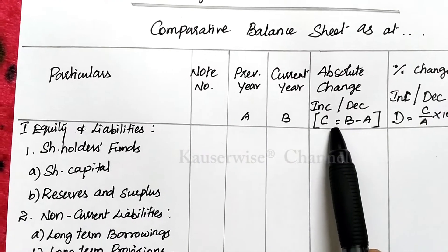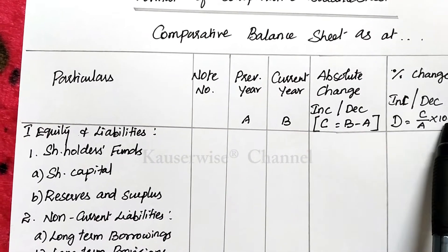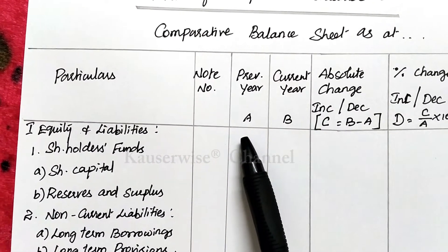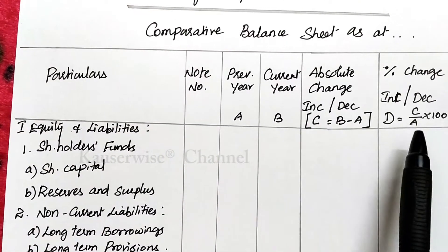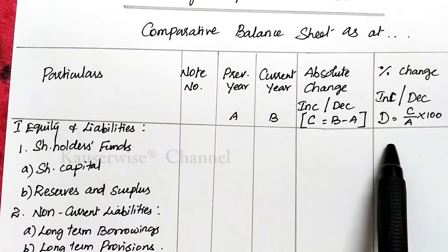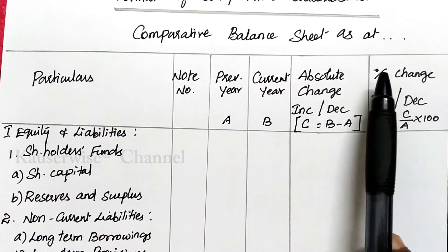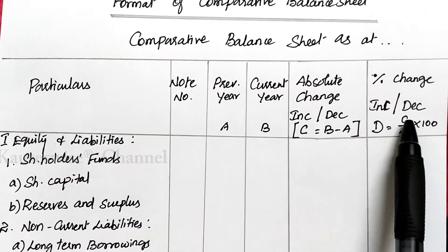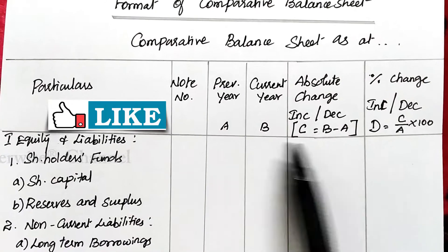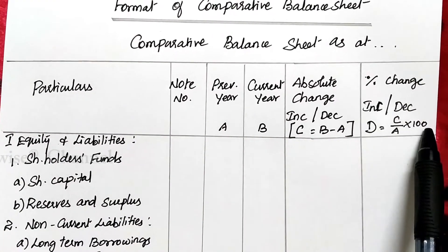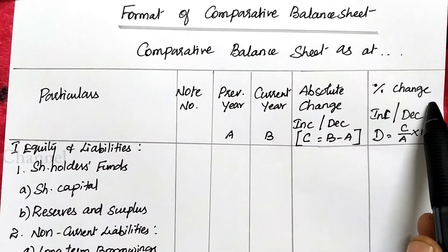The formula for percentage change is D, where D equals C divided by A, into 100. C is the absolute change — that is increase or decrease. A is the base year, which is the previous year. With that you can find out the proportion into 100. So the formula is: absolute change divided by previous year data, into 100. D represents percentage change.